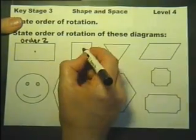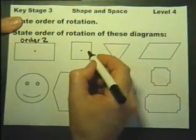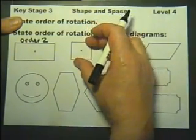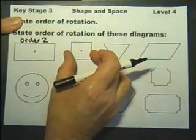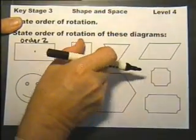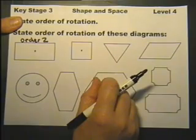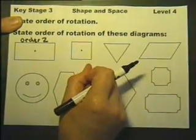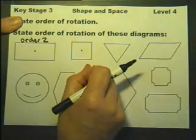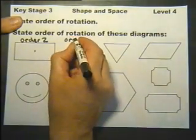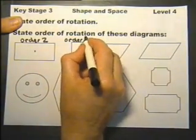Now a square, if you rotate that about the centre, if you rotate it a quarter of a turn it will fit in its own space. If you rotate it half a turn it will fit in its own space. Or if you rotate it three quarters of a turn it will fit in its own space. Or if you turn it all the way round. So we call that a rotation of order 4.